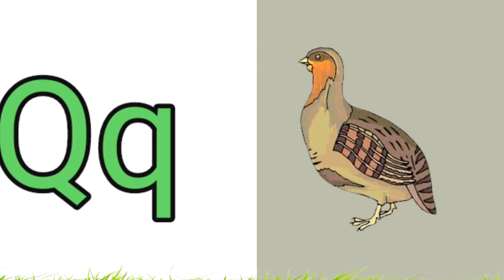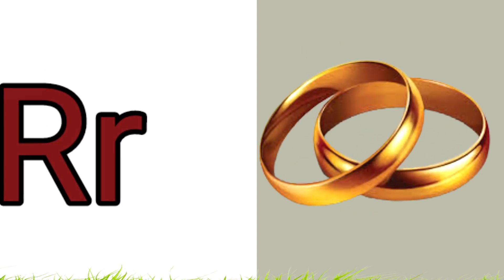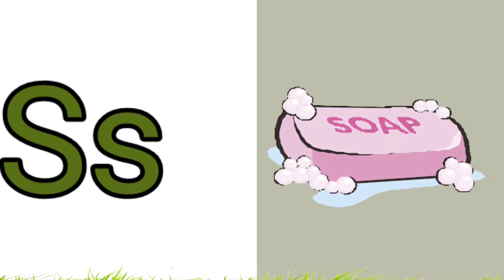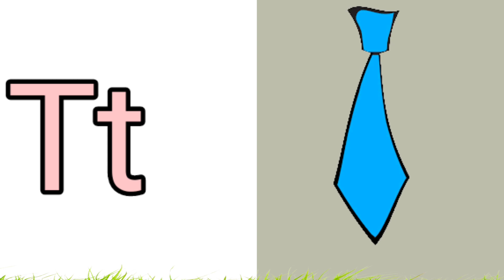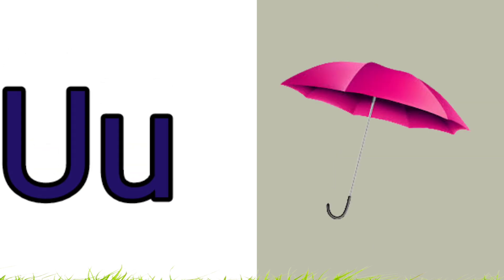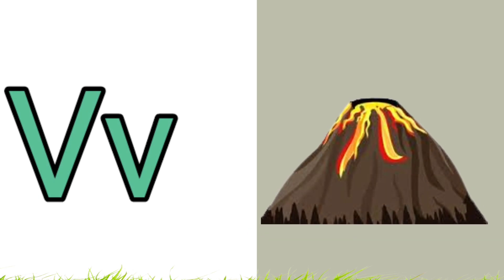Q is for Quail, R is for Ring, S is for Soap, T is for Tie, U is for Umbrella, V is for Volcano.